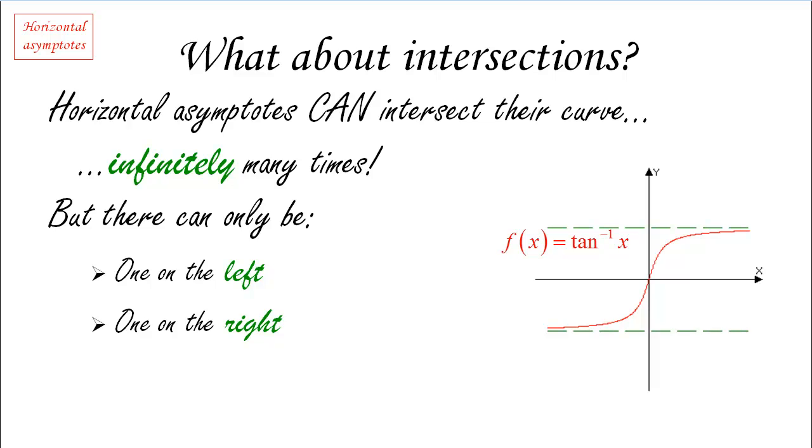You may remember this from your high school. If not, you may want to check with your calculator. And you'll notice that this function has two distinct horizontal asymptotes. On the right hand side, the function is approaching pi over 2. And on the left hand side, it is approaching negative pi over 2. But again, this is the most that can happen. One on the left, one on the right.